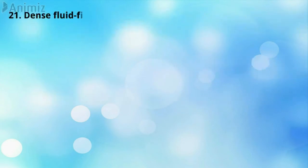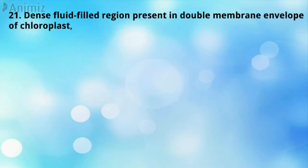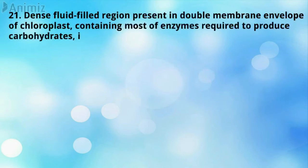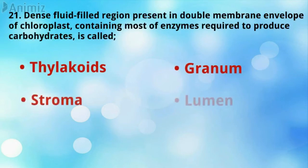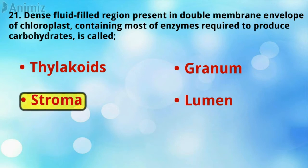The dense fluid-filled region present in the double membrane envelope of the chloroplast, containing most of the enzymes required to produce carbohydrate, is called stroma — that is the correct answer.